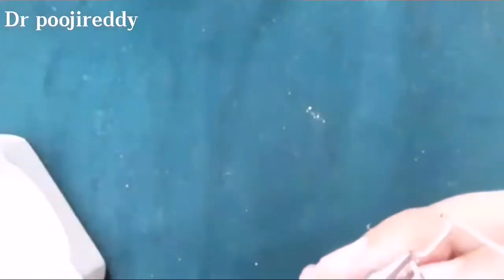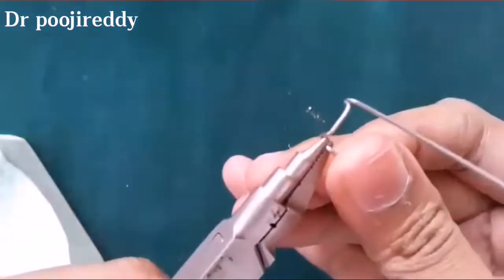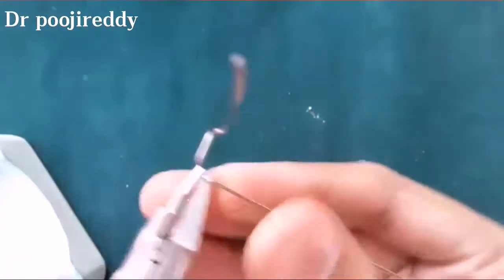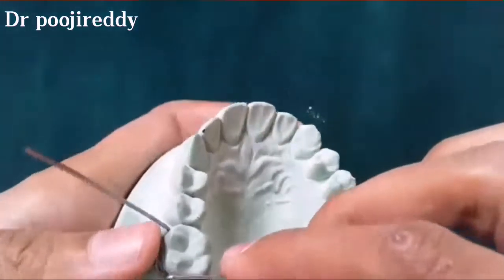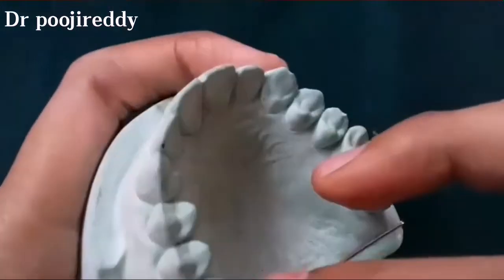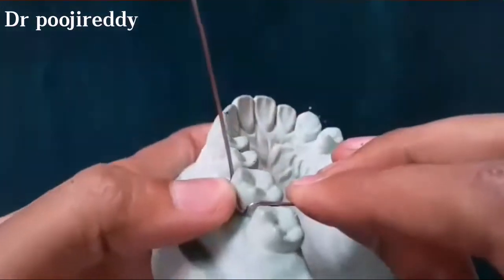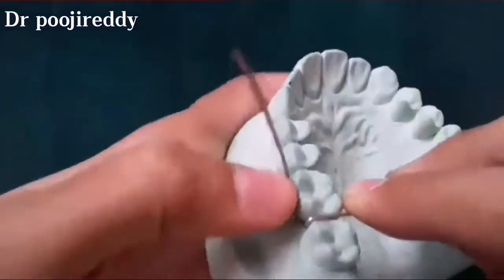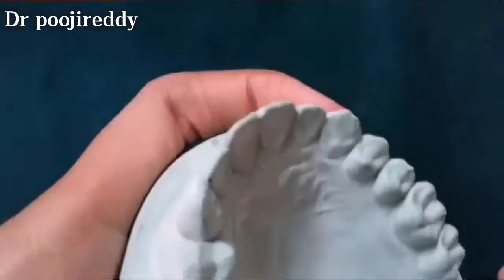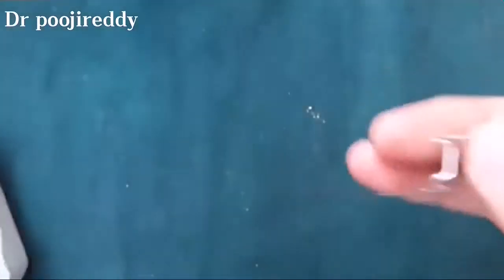Do not bend at a time. Check for adaptation and give a slight bend till the clasp will perfectly adapt to the tooth surface. See, now we got the 45 degree angulation, which is very important for the Adams clasp fabrication.